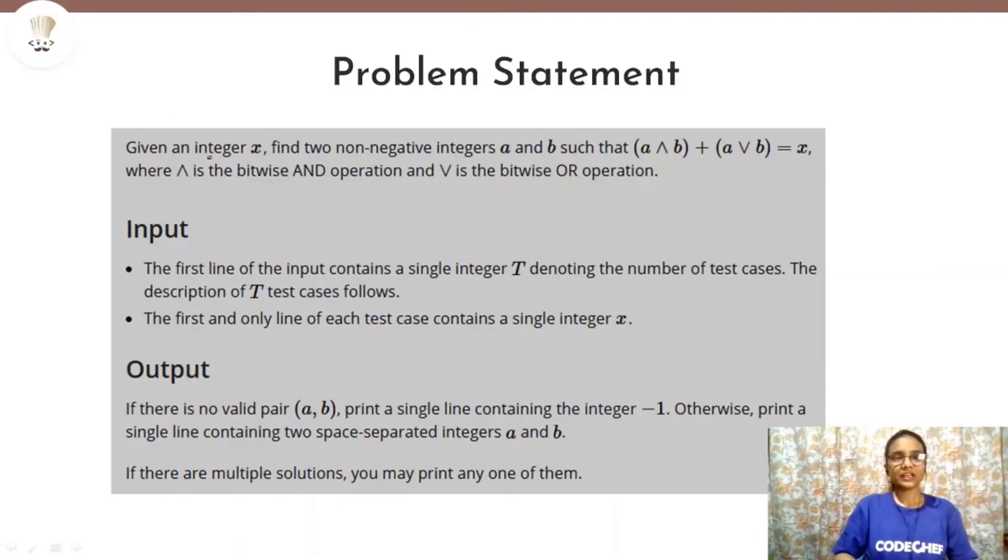So in the problem statement we are given an integer x and we have to find two non-negative integers a and b such that they satisfy this expression: a AND b plus a OR b equals to x. The AND operator and the OR operator used is the bitwise AND and OR operator which means that it operates on binary digits. For each test case, we'll just be given an integer x as input. We are supposed to print a and b pair if we can find such a pair which satisfies this expression. Otherwise, we will print minus 1 and also note that there can be multiple solutions to this problem and we only have to print one of them.